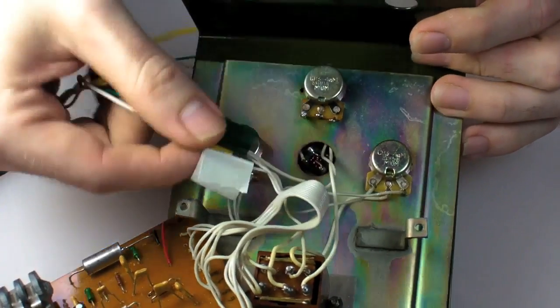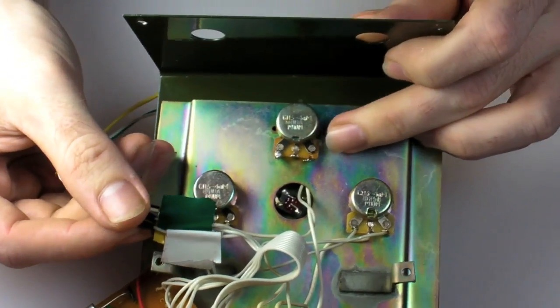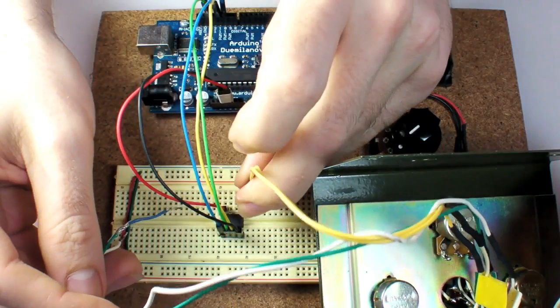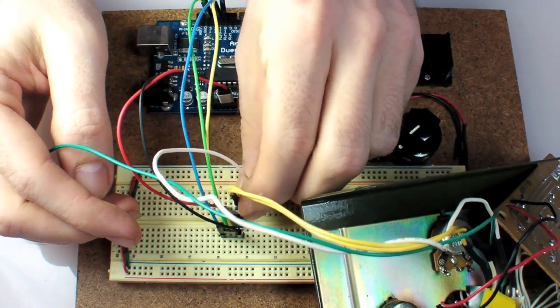On the pedal, I unhooked the three wires connected to the distortion control and wired them into the DigiPot's remaining pins.